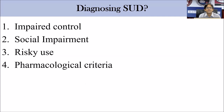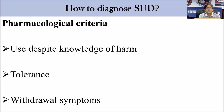While diagnosing substance use disorder, looking at different criteria in DSM as well as ICD, all symptoms can be clustered into four groups: symptoms of impaired control, symptoms of social impairment, symptoms of risky use, and pharmacological criteria. The pharmacological or biological criteria include use despite knowledge of harm — whether physiological, physical, or mental — tolerance, and withdrawal symptoms.